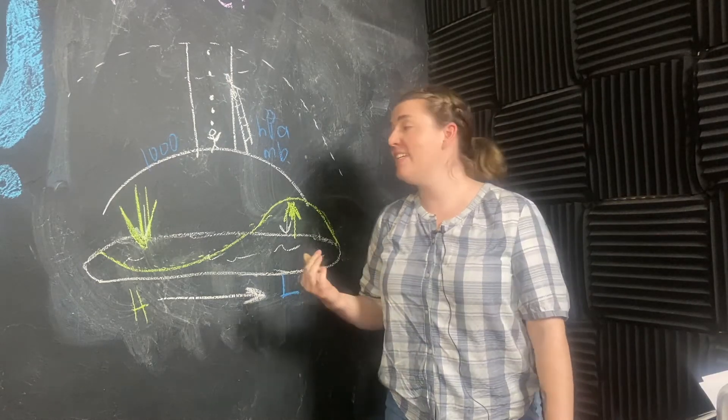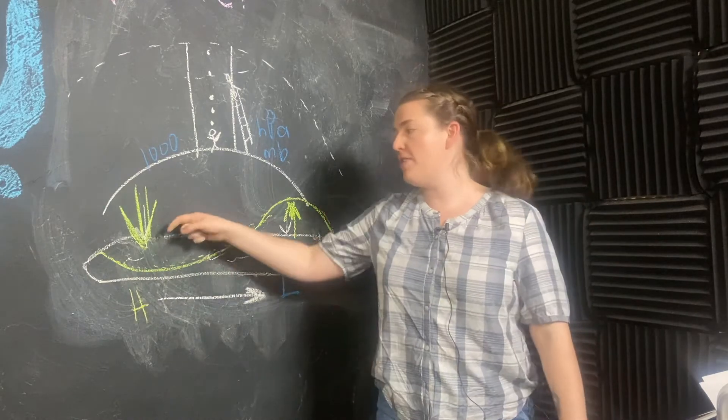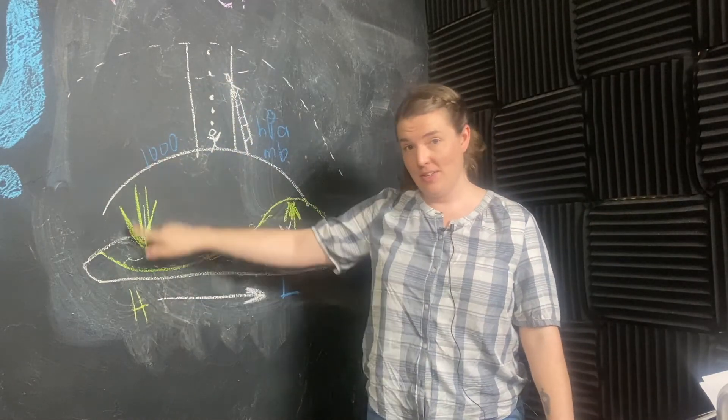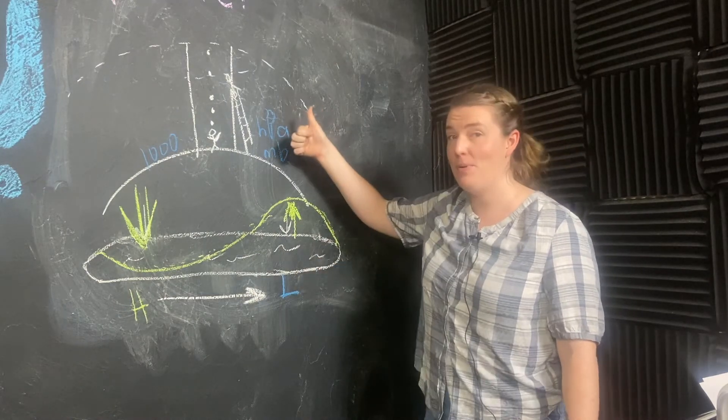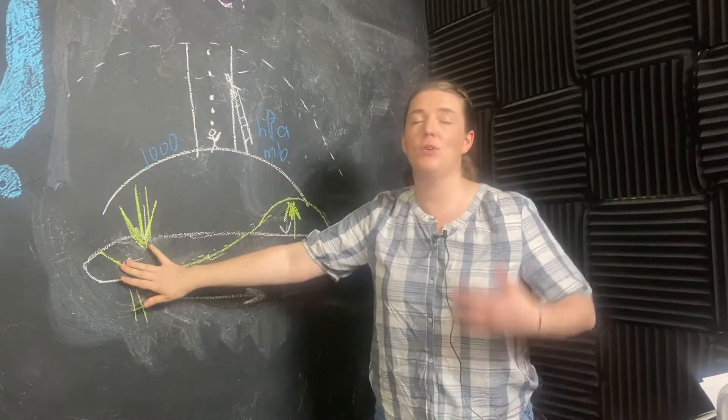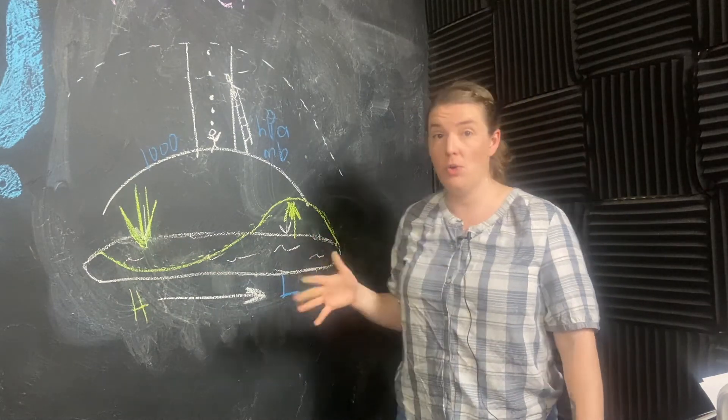One thing to keep in mind is that high surface pressure is associated with air going down and low surface pressure is associated with air going up. So we have sinking motion over regions of high pressure and rising motion over regions of low pressure.